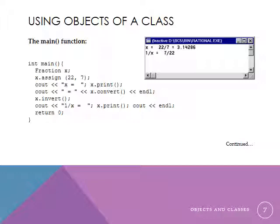And then a little bit later on, we invert the fraction, which we wouldn't be doing with pi, and now it's 7 over 22.